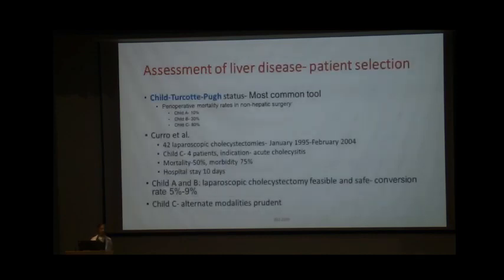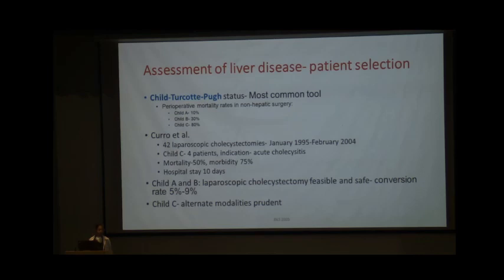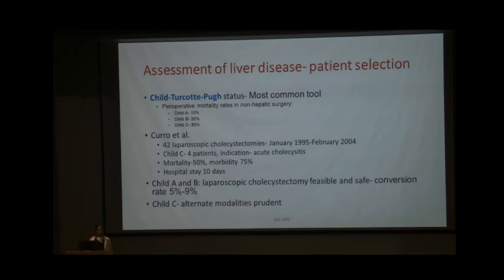The Child-Turcotte-Pugh status is the oldest and most commonly used tool for selecting patients for surgery. From large data on non-hepatic surgery, Child A patients have a perioperative mortality of less than 10%, Child B around 30%, and Child C a very high risk of around 80% — prohibitive for elective surgery. Child A and B patients are generally considered safe candidates for cholecystectomy with a conversion rate of about 5–10%, while Child C patients are poor candidates and alternative modalities should be sought.